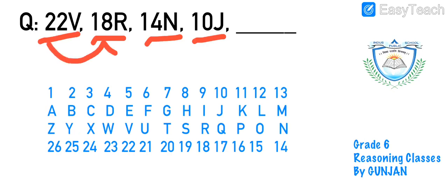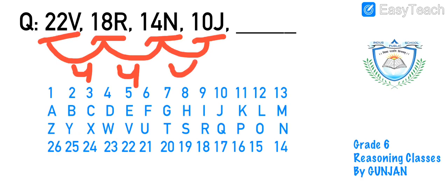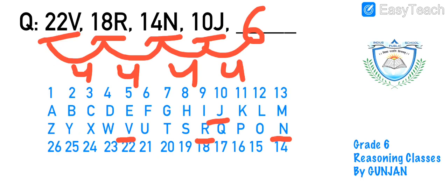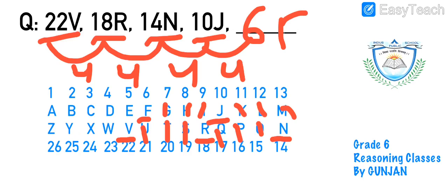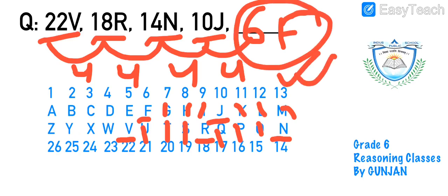Next question: 22v, 18r, 14n, 10j. Numbers decrease: 22, 18, 14, 10 — a difference of 4 each time. So the next number is 6. For alphabets: v, r, n, j — three alphabets are skipped between each pair. Skipping three letters after j gives us f. The answer is 6f.